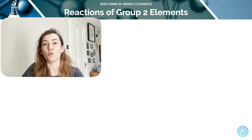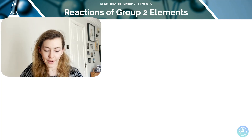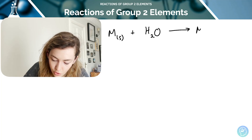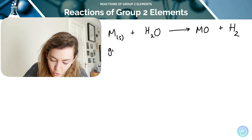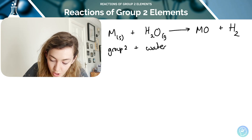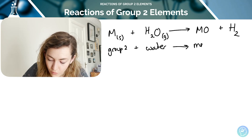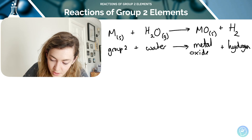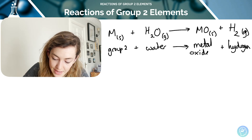Group 2 metals also react vigorously with steam to form metal oxides and hydrogen. So solid metal M reacts with gaseous water (steam) to create a solid metal oxide and gaseous hydrogen.